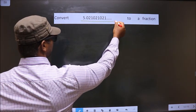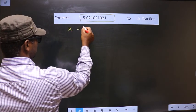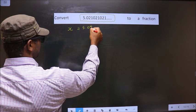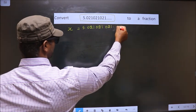First, whatever we have to convert, you take that to be x. So x equals 5.021, 021, 021, and so on.